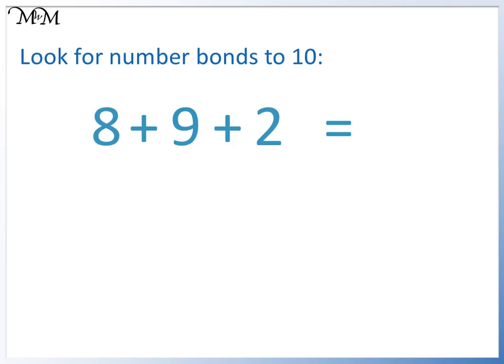8 and 2 are a number bond to 10. We leave 9 in our sum but swap 8 plus 2 with a 10. Now 9 plus 10 equals 19.